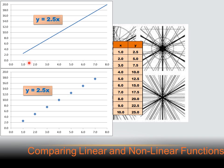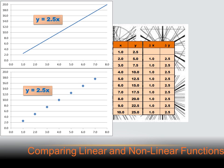For a continuous domain, at a value of 1.5 we could go up and find a value of y. On a line or a linear equation, there's a constant rate of change — as x changes, the increase in y remains constant. The increase in x between 1 and 2 is 1, and the increase in y between 2.5 and 5 is 2.5. That pattern continues throughout the whole series of numbers — it's a constant rate of change.